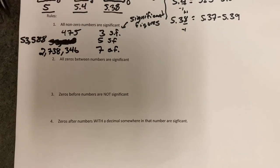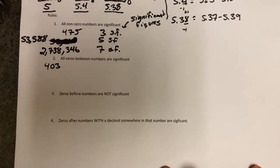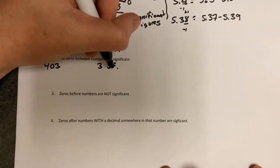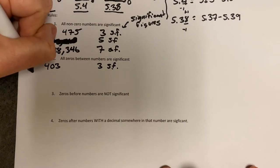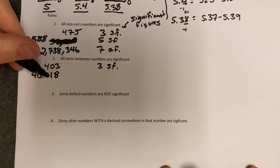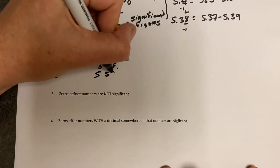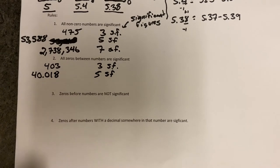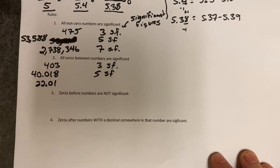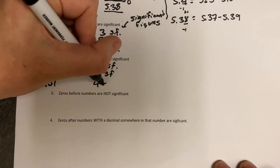The next rule: all zeros between numbers are significant. In other words, if you have 403, this has one, two, three significant figures. This counts for decimals too. For example, 40.018 has one, two, three, four, five sig figs, because those zeros fall between the four and the one — as long as they're sandwiched between numbers, it doesn't matter if there's a decimal anywhere in there, it's going to be significant. Another example: 22.01 — that zero is sandwiched between the two and the one, so all digits are significant. This would be four significant figures.